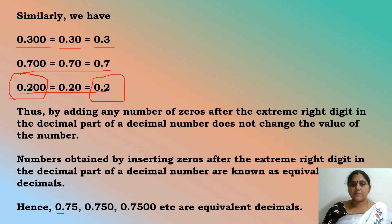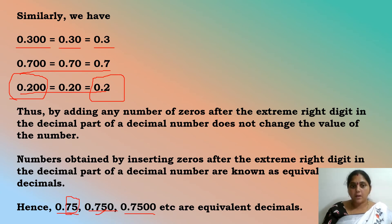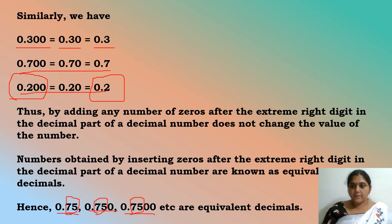Hence 0.75, 0.750, 0.7500, etc. are equivalent decimals. When checking equivalence, observe only the digits after the decimal — whether they are equal or not. There is no need to consider trailing zeros as separate values, since zeros don't change the value. Consider only the significant digits after the decimal point to identify whether the given decimals are equivalent.